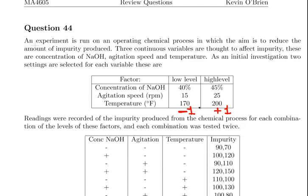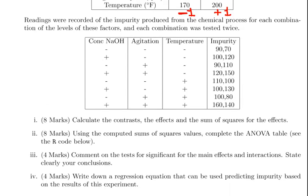What we have here is readings recorded. This is the low level setting. We have eight treatment groups. I'm going to count them out: one, two, three, four, five, six, seven, eight. For the sake of clarity, I'm going to call concentration factor A, agitation factor B and temperature factor C.